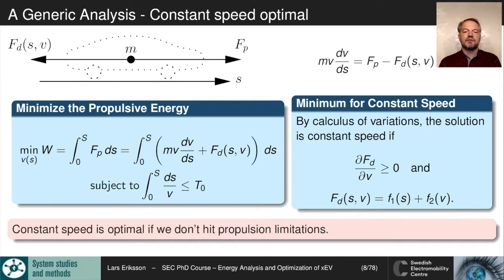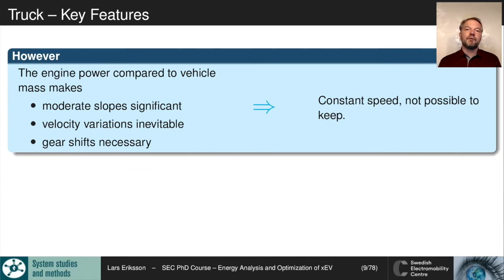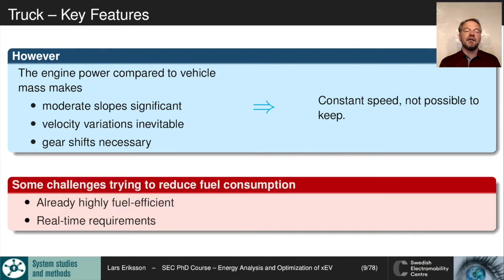For trucks, some key features differ from a conventional car. The engine power is much smaller relative to the vehicle mass, so moderate slopes are significant and engine limitations are frequently hit — velocity variations are inevitable and downshifts in uphills are necessary. Trucks cannot maintain constant speed, so another solution must be found. Additional challenges are that they are highly fuel efficient, operating close to the engine optimum, and we also need to cope with real-time computational requirements.